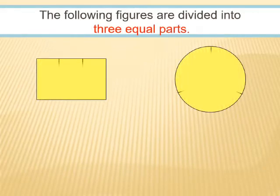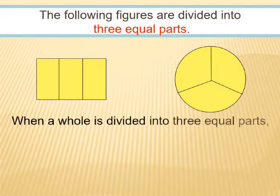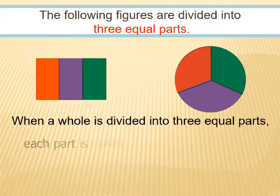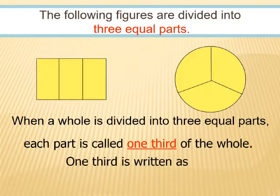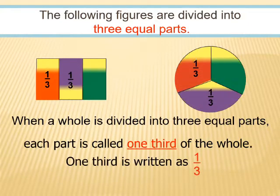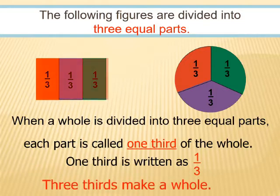These figures are divided into three equal parts. When a whole is divided into three equal parts, each part is called one third of the whole. One third is written as one by three, and three thirds make a whole.